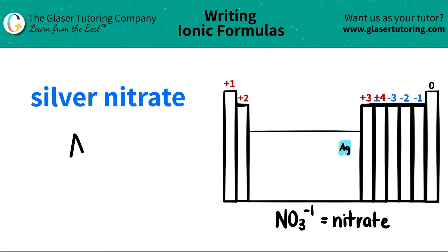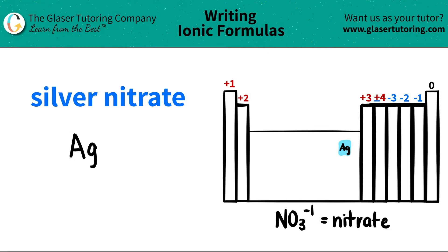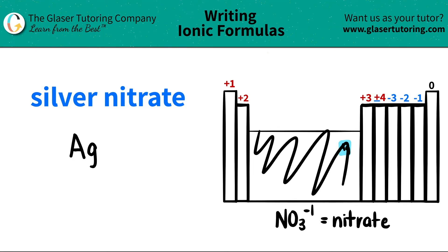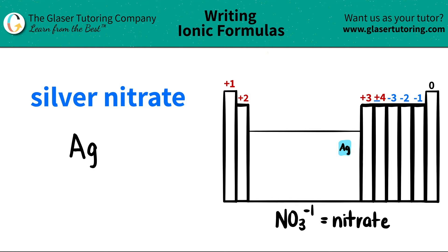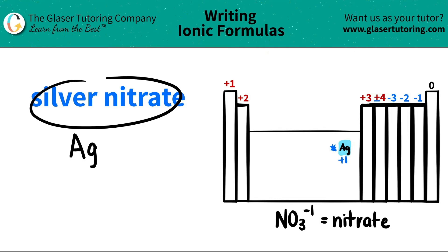In order to write a formula, we have to figure out what the charge is for silver, Ag. Remember that anything in this transition metal box has multiple charges. But star this one, guys — Ag, even though it's in this box, only has one charge. Silver is always a plus one charge. They didn't give me a Roman numeral here, which means silver has to have one charge. It's a plus one.